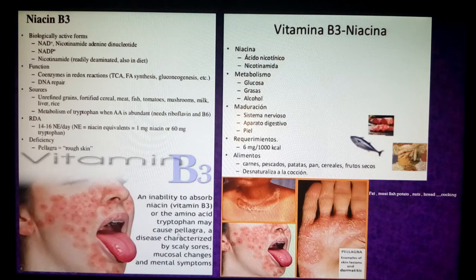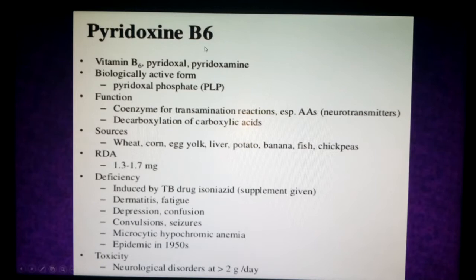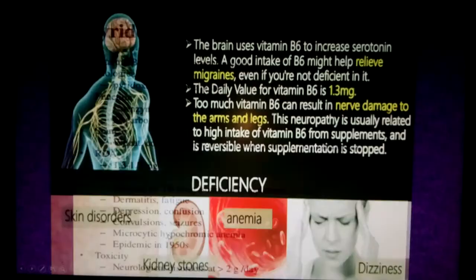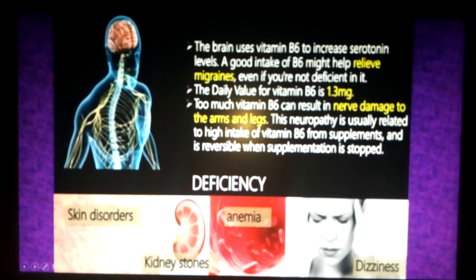For pyridoxine (B6), its importance comes from the consequences of deficiency: dermatitis, seizures, convulsions, headache, and microcytic hypochromic anemia. It is a hematopoietic vitamin, working together with folic acid. It is also neurotropic. Deficiency leads to fatigue, dizziness, and migraine; some experiments use B6 to relieve migraine with useful results in selective cases, even when serum levels appear normal. Too much vitamin B6 can cause nerve damage and paresthesia of the arms and legs, but this neuropathy is correctable by controlling intake.